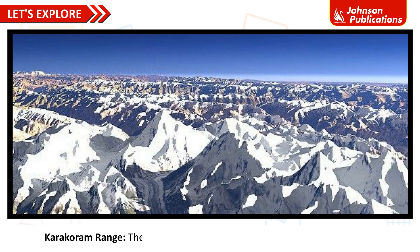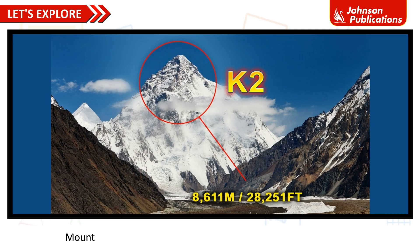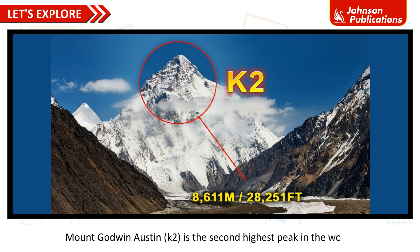The Karakoram Range lies to the northwest of the Himalayas. Mount Godwin Austin, also known as K2, is the second highest peak in the world.